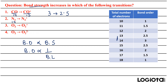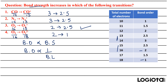For O₂ → O₂⁺: O₂ has 16 electrons (BO = 2) and O₂⁺ has 15 electrons (BO = 2.5), so bond strength increases here. For O₂ → O₂²⁻: O₂ has 16 electrons (BO = 2) and O₂²⁻ has 18 electrons (BO = 1), so bond strength decreases. The correct answer is the third option — O₂ → O₂⁺ — because bond strength is directly proportional to bond order.